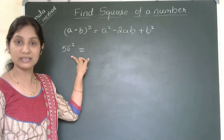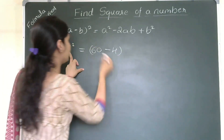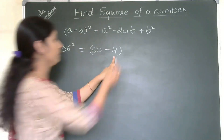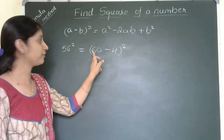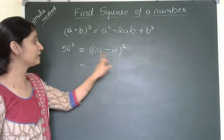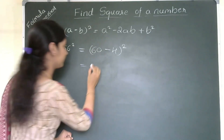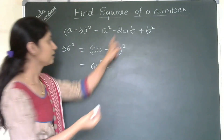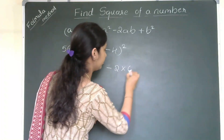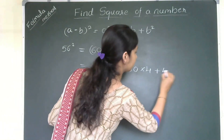So I am writing it as (60 − 4)², which gives me 56 — there is no change in value. Now it is in the form of (a − b)², so I can solve by substituting these values in place of a and b. a² is 60², minus 2 × 60 × 4, plus b² which is 4².